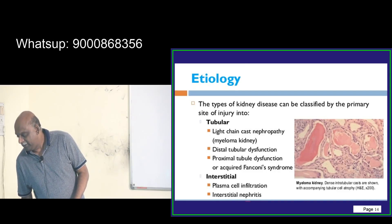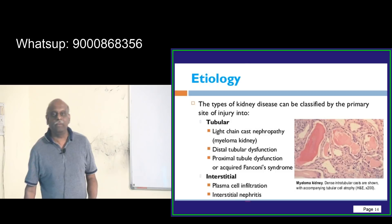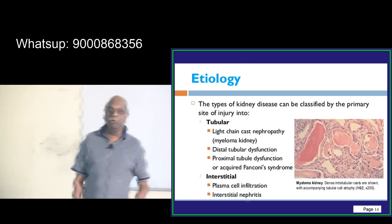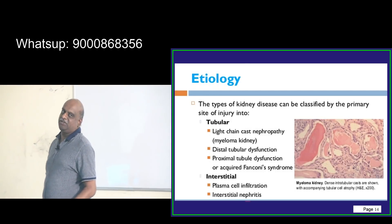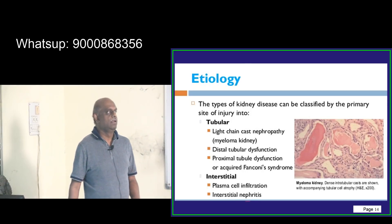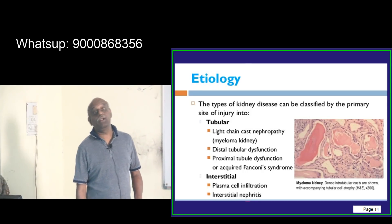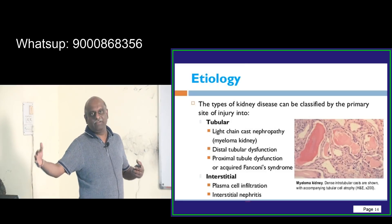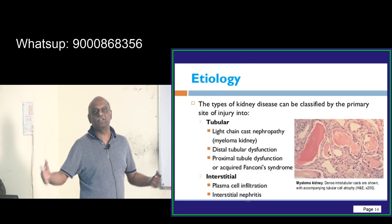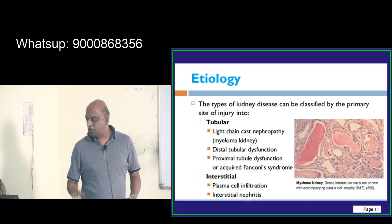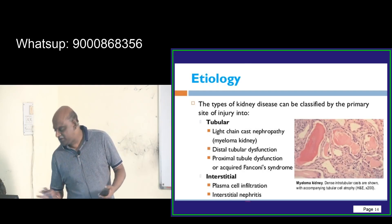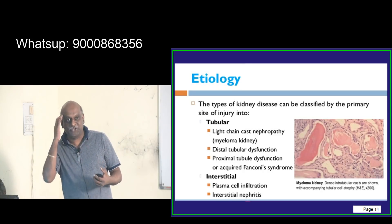Ravi asked a good question. Multiple myeloma, solitary myeloma, monoclonal gammopathy of unknown significance, heavy chain disease, and smoldering myeloma — these are all the various subclasses of myeloma.